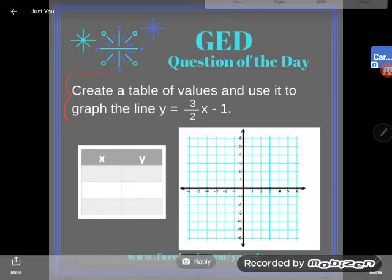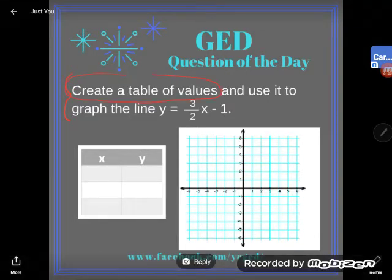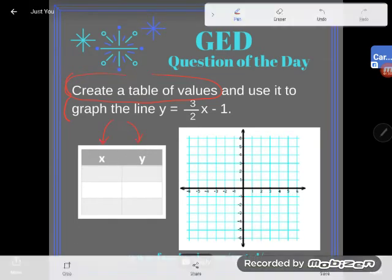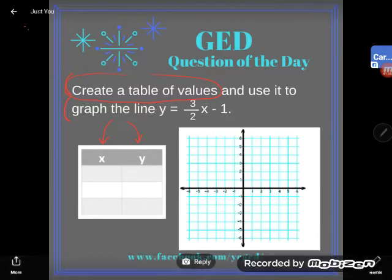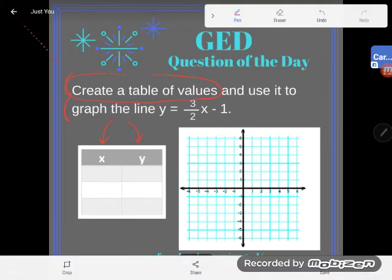First thing, it says create a table of values. Now they started this table for me. Notice a couple of things about the table: there's an x column and there's a y column. When you look at a line, all a line is is a bunch of points that are all in a row, and each one of those points has an x value and a y value.